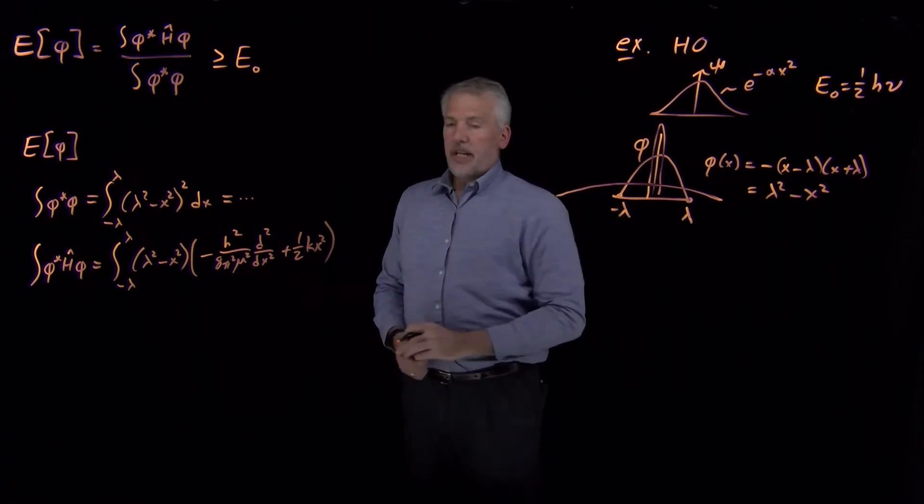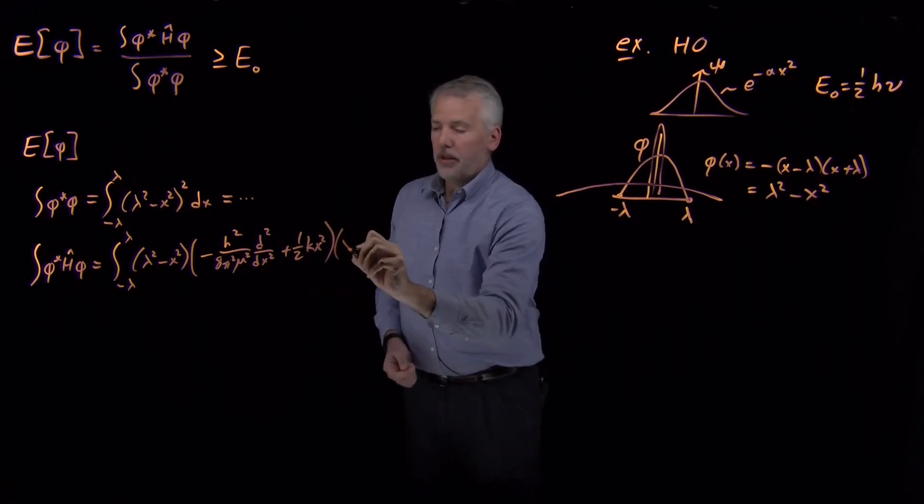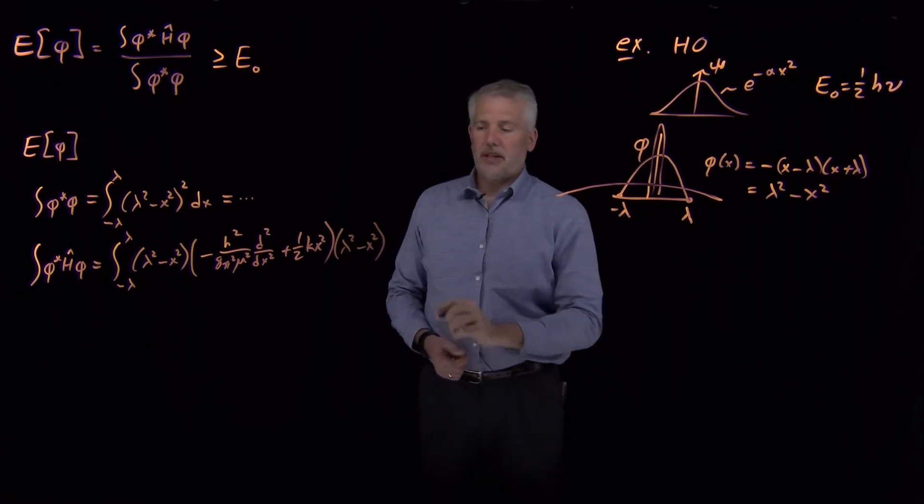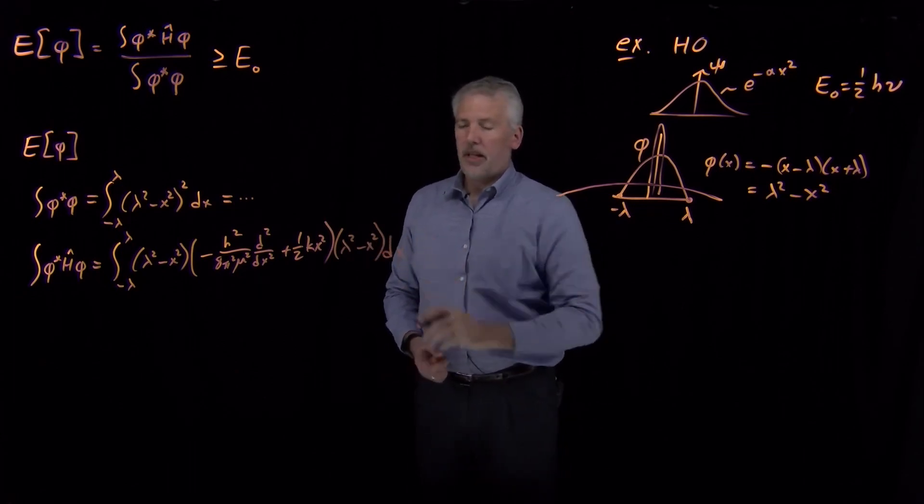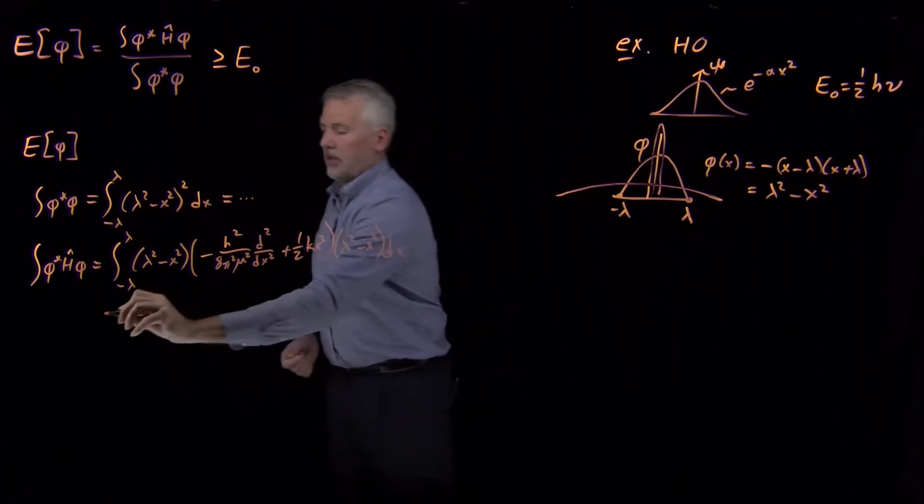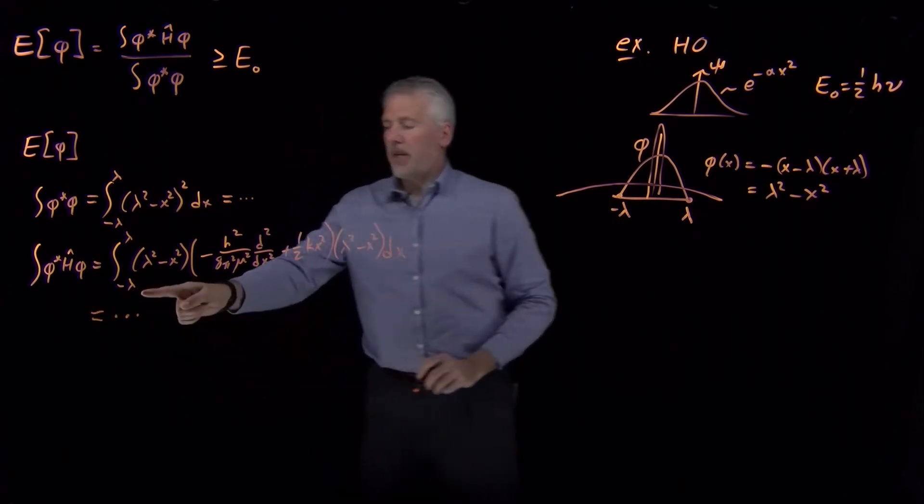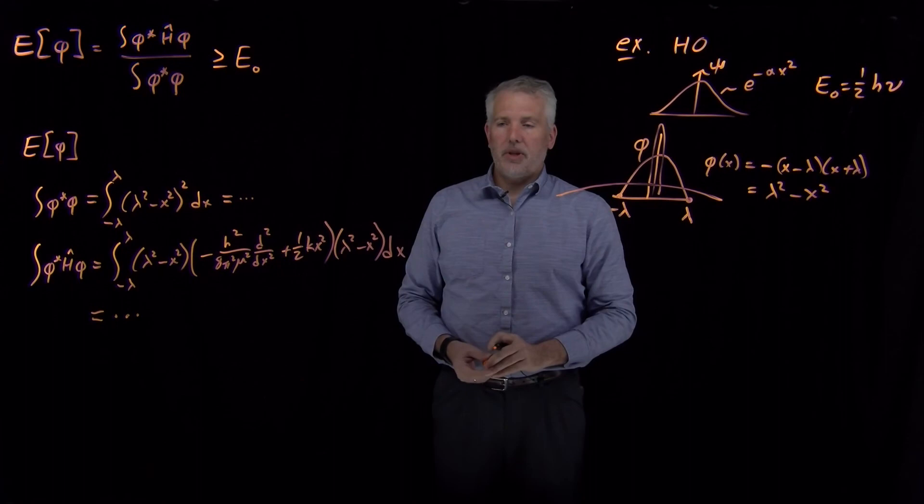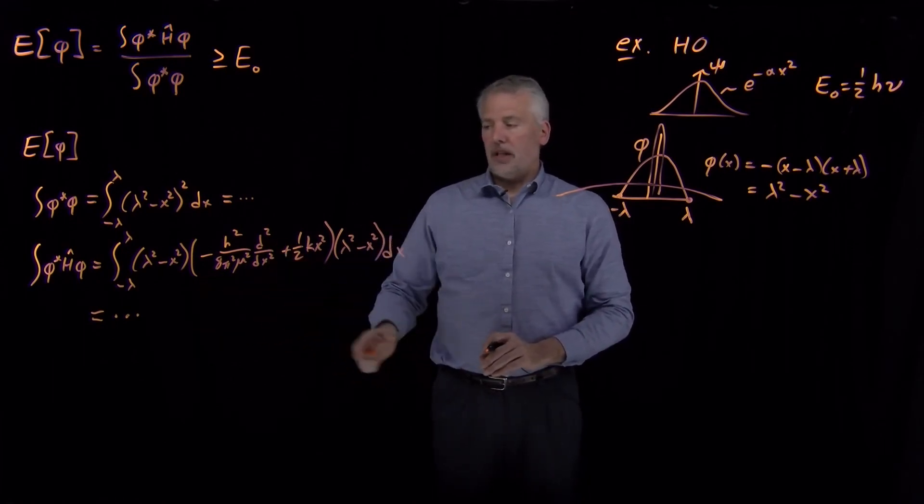And then the potential energy looked like one-half kx squared. That potential and kinetic energy terms are both multiplying the wave function again.